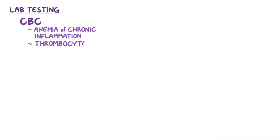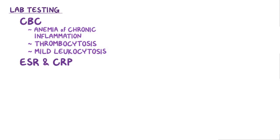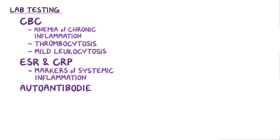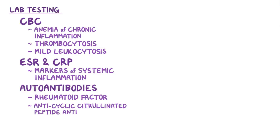Laboratory testing typically includes a complete blood count, which might show anemia of chronic inflammation, thrombocytosis, and a mild leukocytosis. In addition, an ESR and a CRP might be taken, since they are markers of systemic inflammation. It's also important to test for autoantibodies, like rheumatoid factor and anticyclic citrullinated peptide antibodies, both of which are present in most individuals with rheumatoid arthritis.